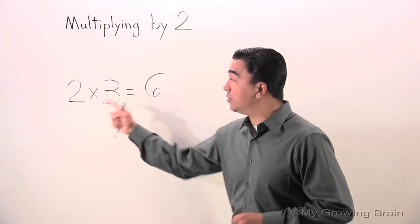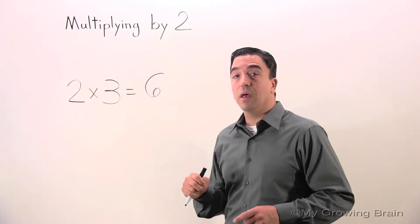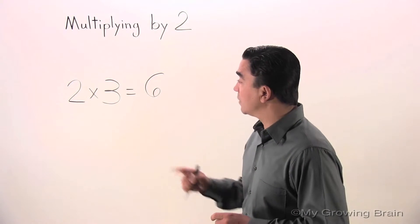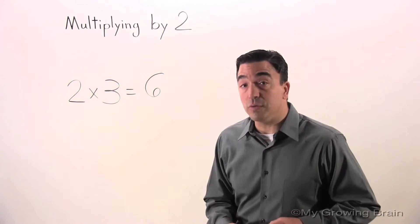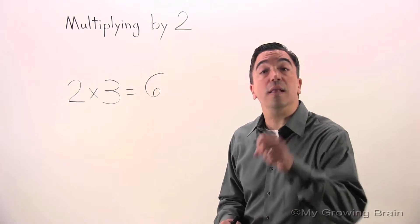So, once again, we know that 2 times 3 is equal to 6. But we also know that 3 2s is equal to 6. Let me show you.